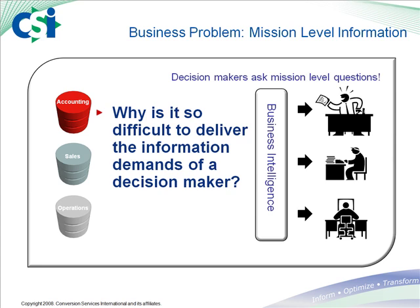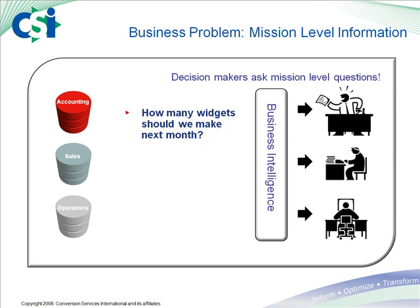Let's look at a fictitious example. Let's say an executive asks, how many widgets should we make next month? Well, what if we only looked at the sales forecast to answer that question, and determined that we needed to produce 10,000 widgets? Well, this myopic view could cost the organization a lot of money, because if we expand our investigation to include accounting, we may find that we already have 10,000 widgets in inventory.